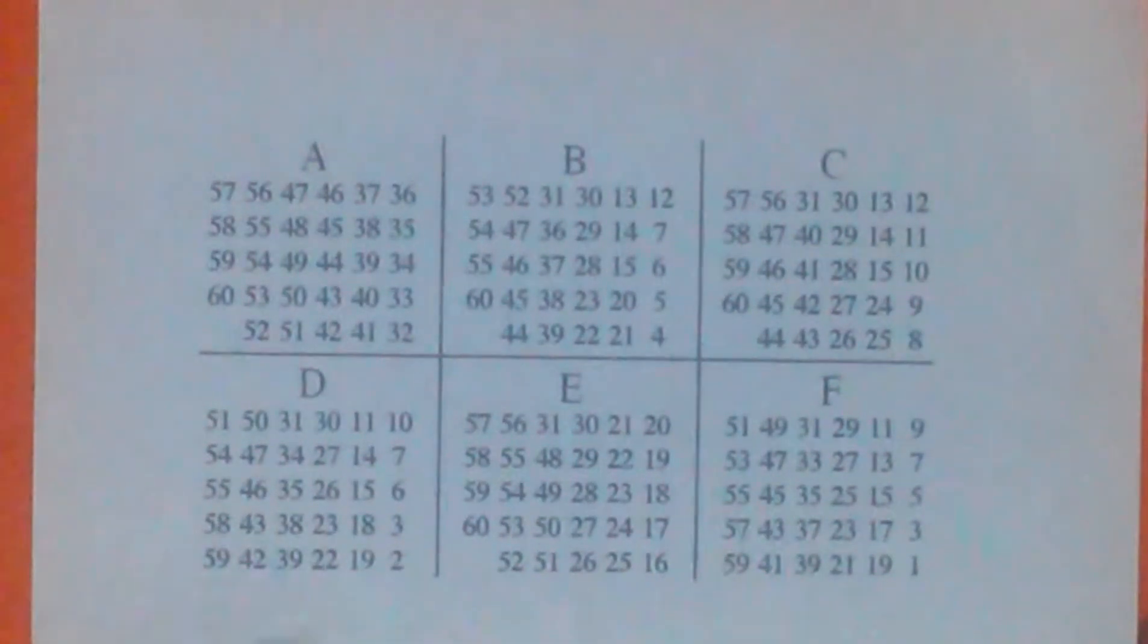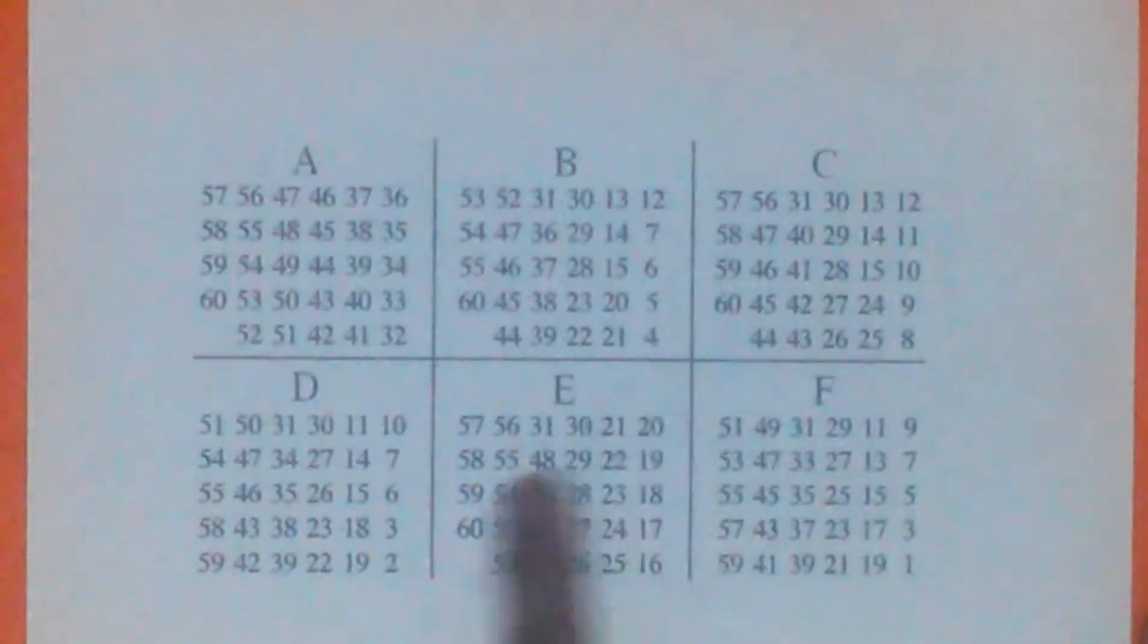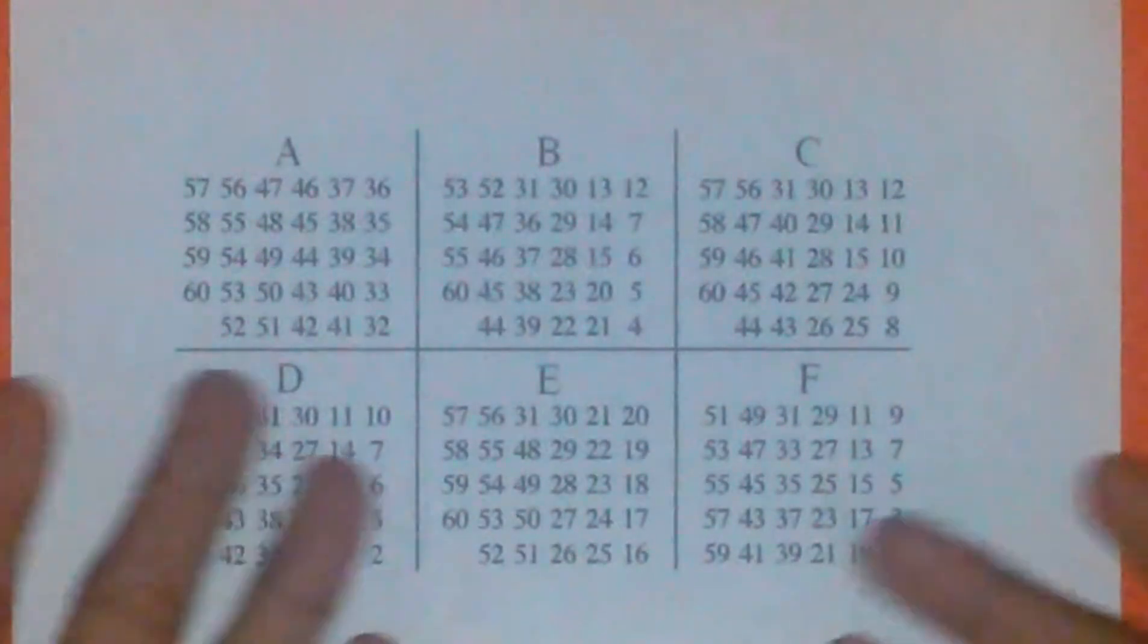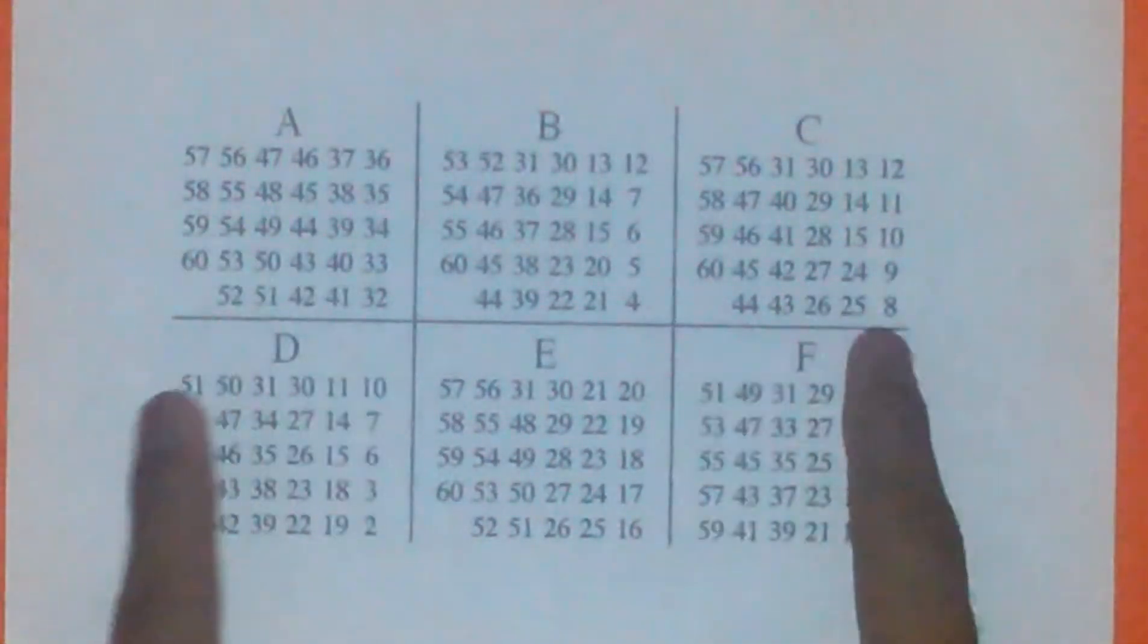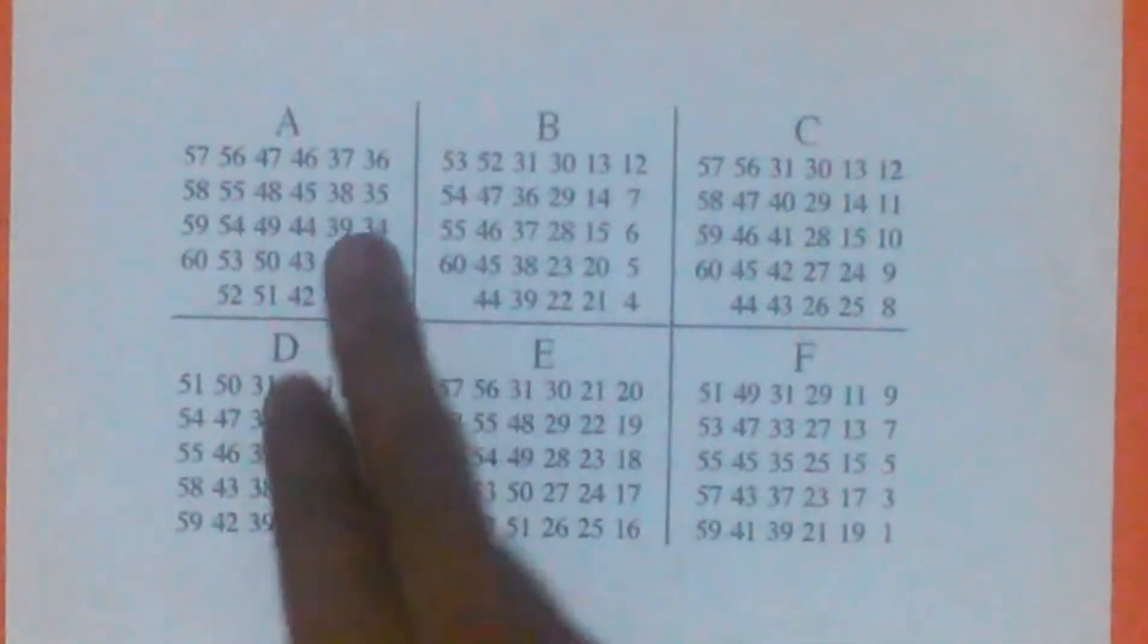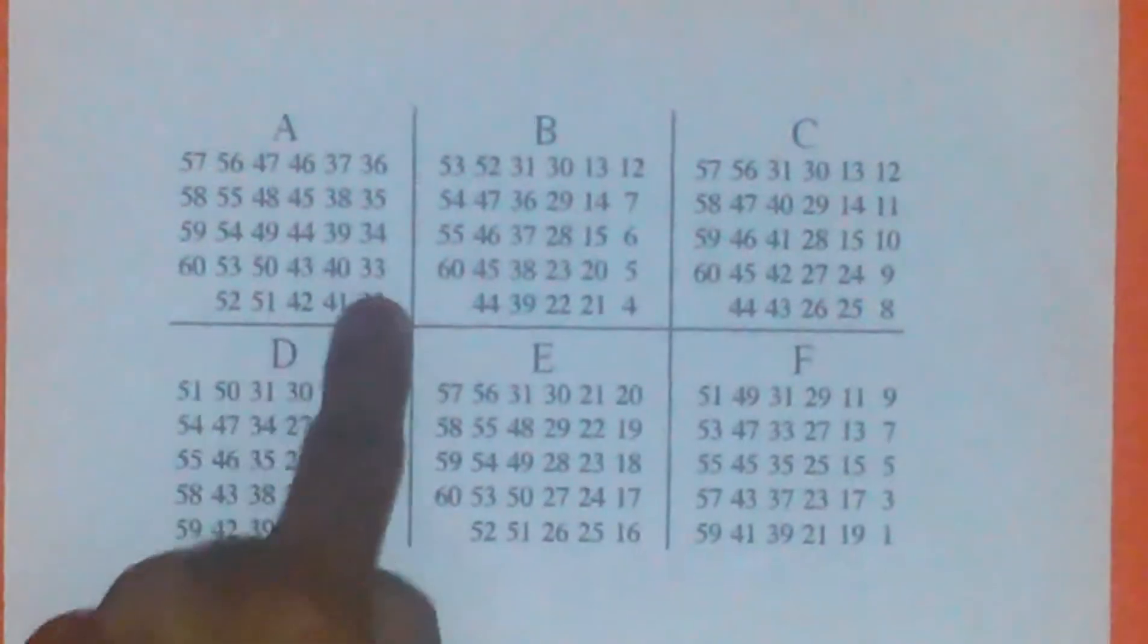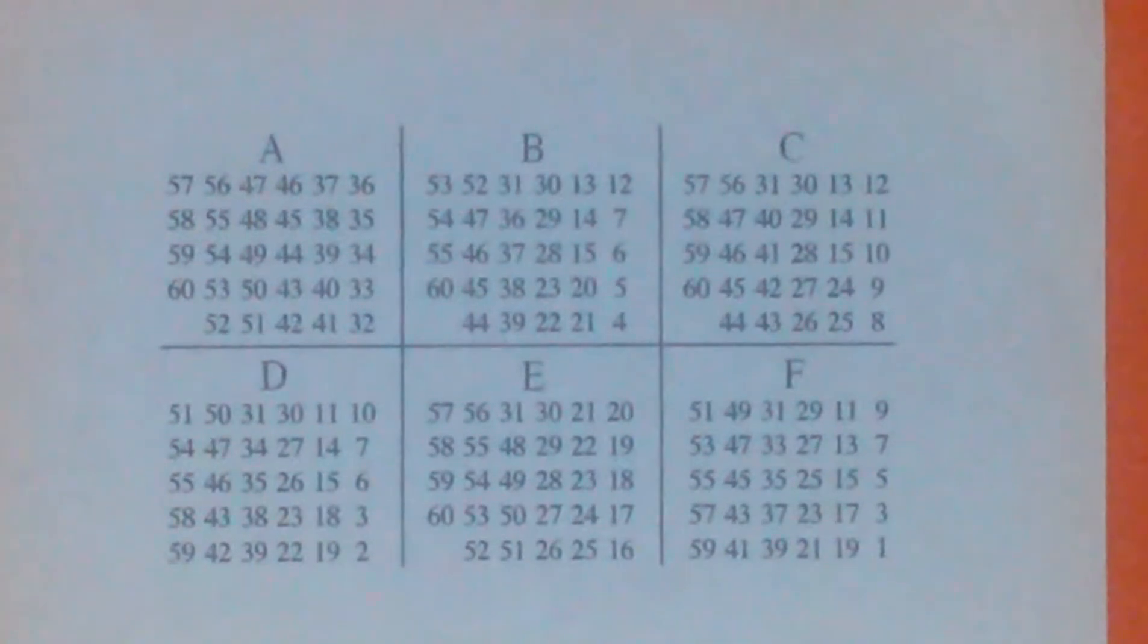So say they say 15. You see it's 15, and they tell you it's in B, C, D, and F. So now you have no idea what number they picked. The way to find out is very simple. On the bottom of every corner of the column, the bottom right corner...